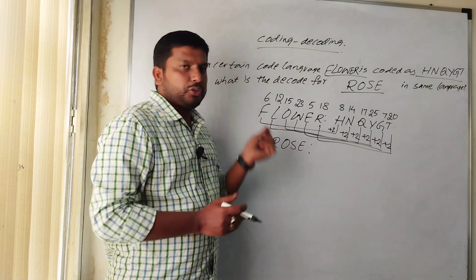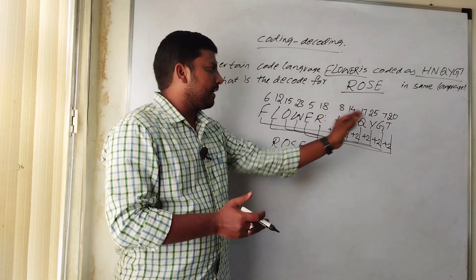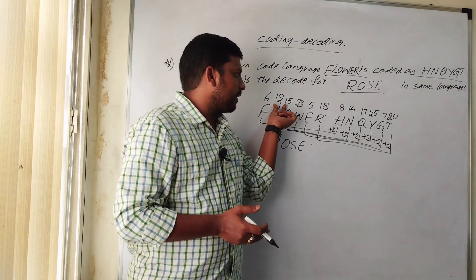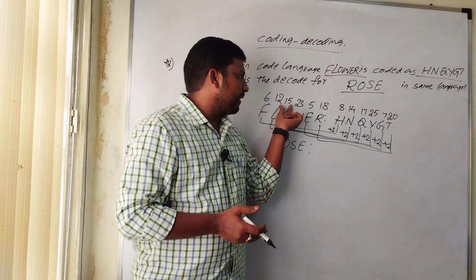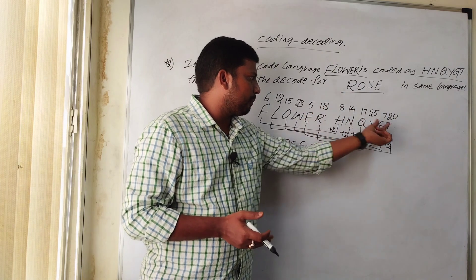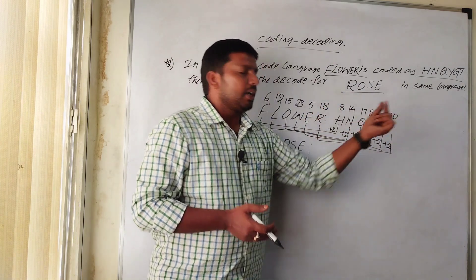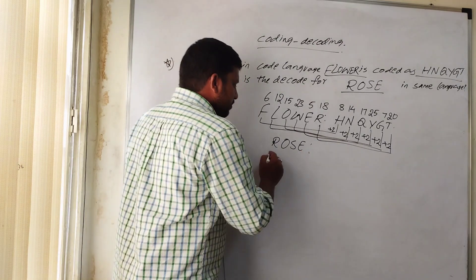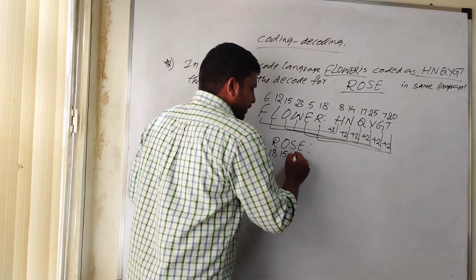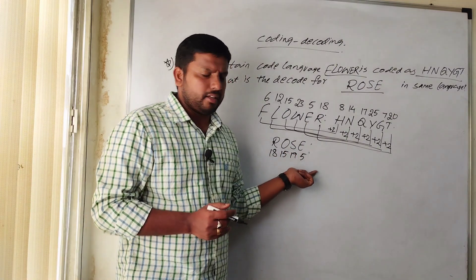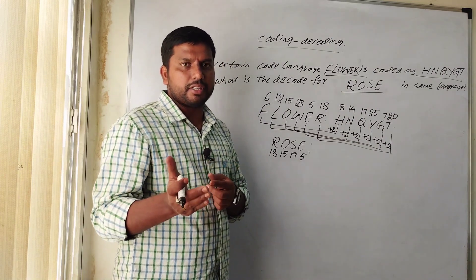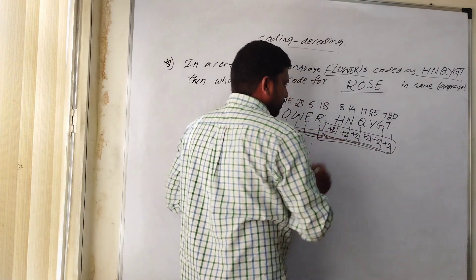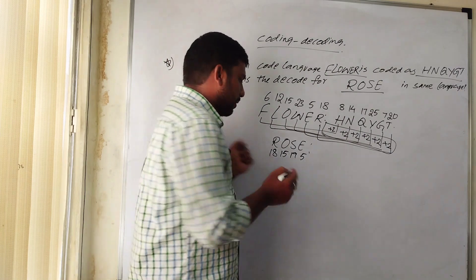Each letter, one letter is skipped, then after that the letter is taken. 6th place to 8th place, 12th place to 14th place, 15 to 17, 23 to 25, 5 to 7th place, 18th place to 20th place. Same we do here for Rose. So Rose, R is 18, O is 15, S is 19, E is 5. The placing numbers from 1 to 26. So we add plus 2 to each.